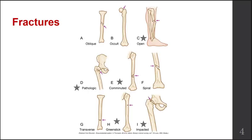Where it got its name — greenstick fracture — and this will likely help you remember what it is: the fracture looks similar to what happens when you try to break a small green branch on a tree. If you take one of these branches and bend it, there's flexibility, and if you keep bending it, it starts to break just in the outer areas. Compare that to if you took an older, dry branch and tried to break it — it would generally snap.